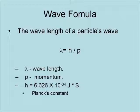where lambda is the wavelength, p is the particle's momentum, and h is Planck's constant, which is equal to 6.626 times 10 to the negative 34 joule seconds.